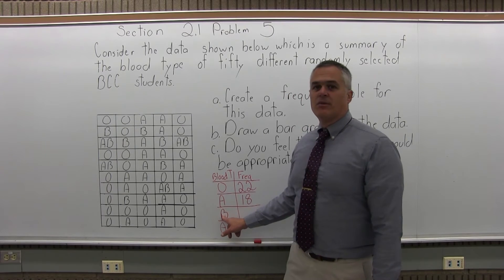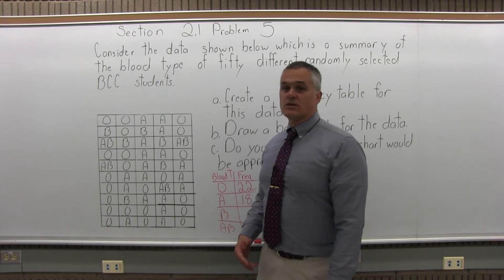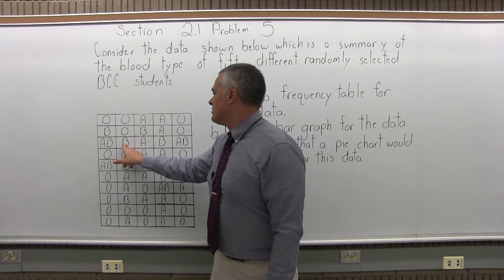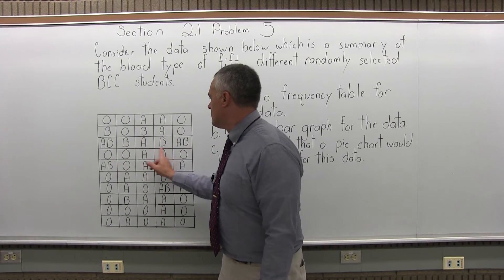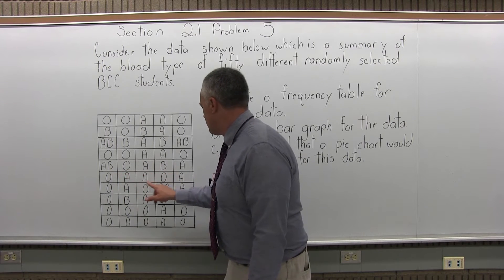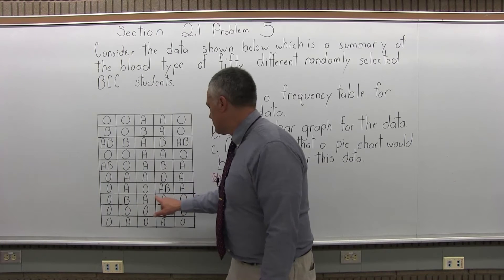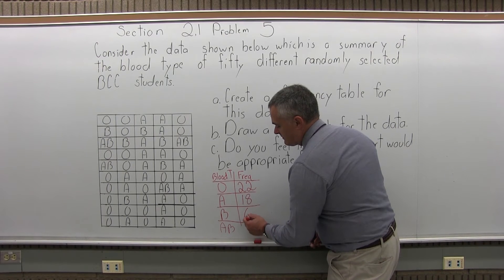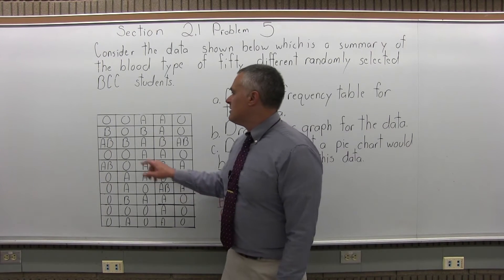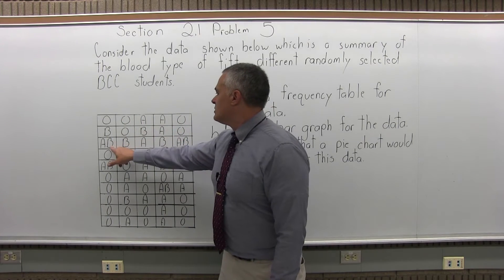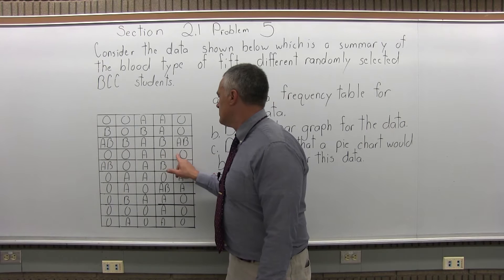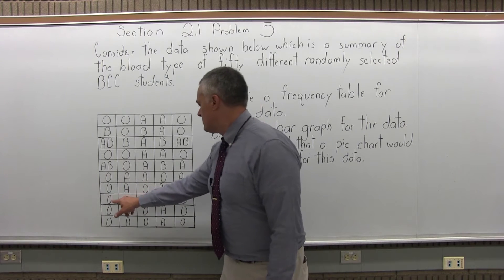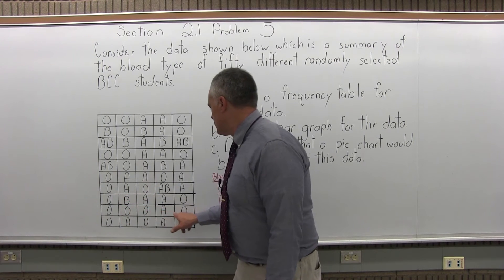Blood type B. How many occurrences of blood type B did we have? Same process. Go through and count them. Top right, I don't have any, but then 1, 2, 3, 4, 5, 6. And I guess that was the last one, so there was 6. And finally blood type AB is 1, 2, 3, 4.